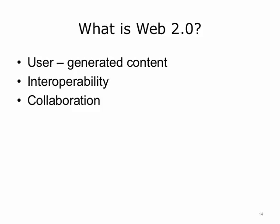In our discussion of social learning, I've mentioned various social media tools, and many of these tools you may already be familiar with as Web 2.0 applications and websites you use in your personal life. Most Web 2.0 tools have three characteristics: first, they are comprised of user-generated content; second, they have interoperability with other web-based applications; and third, they support collaboration with other users.